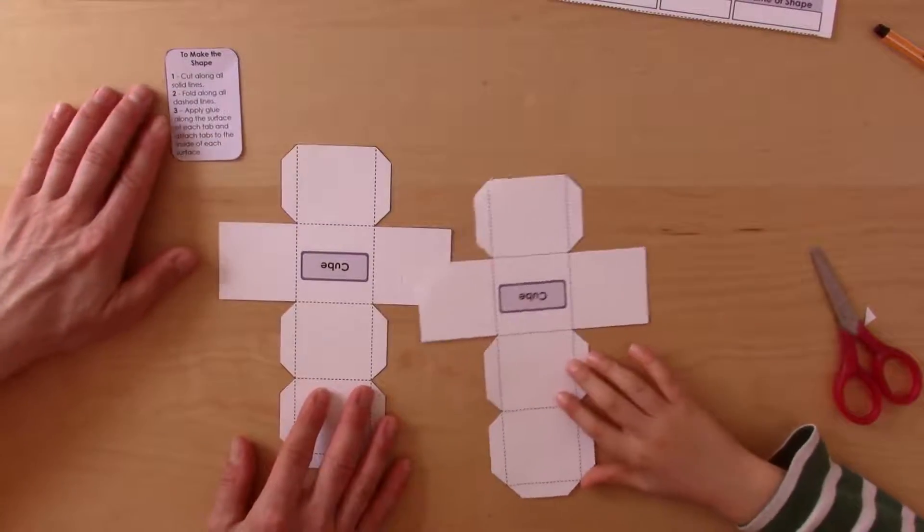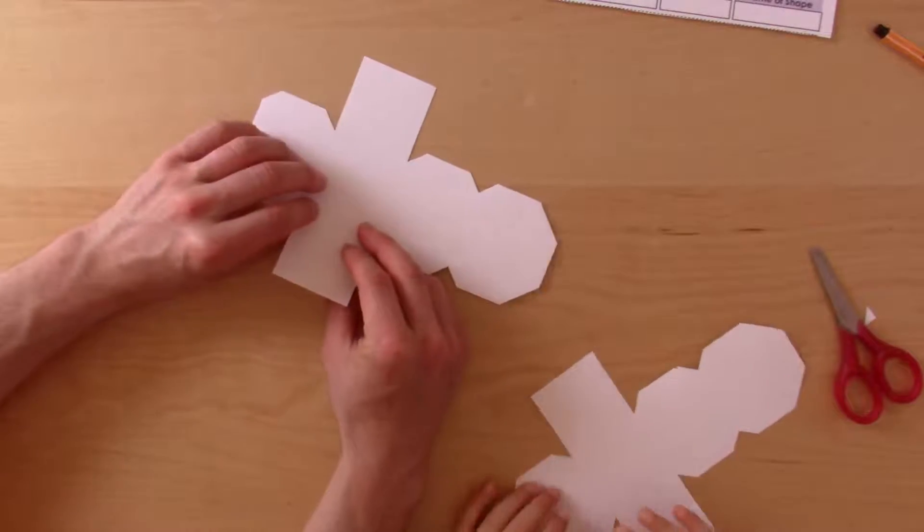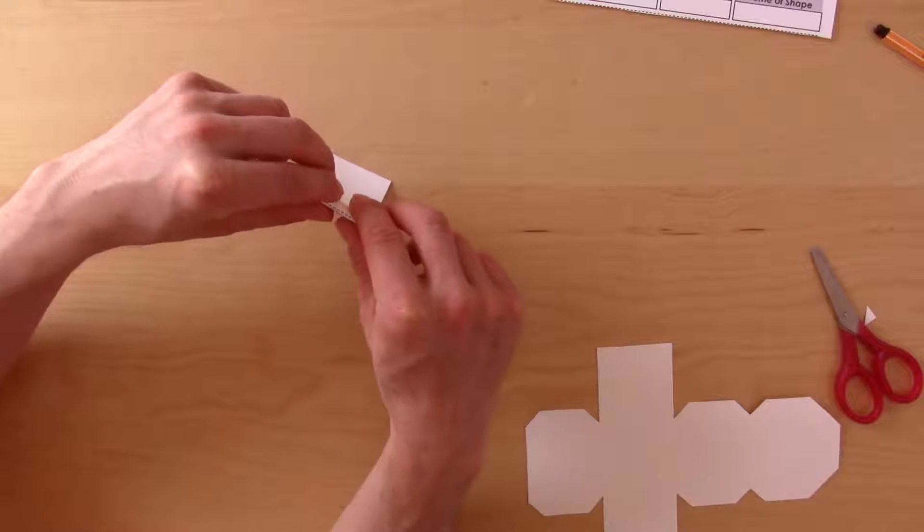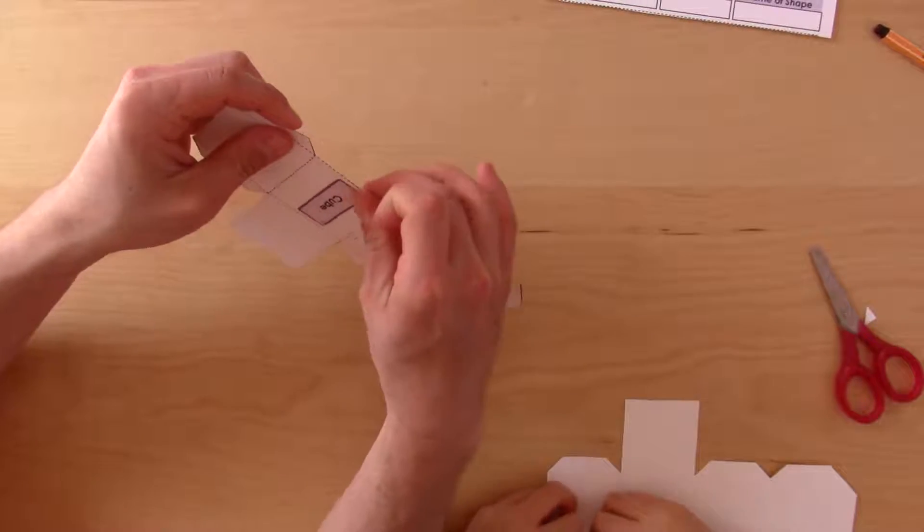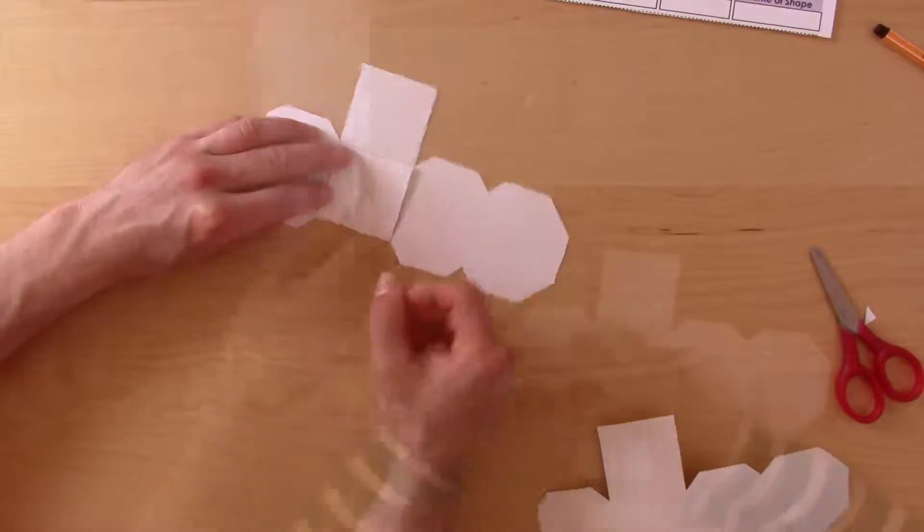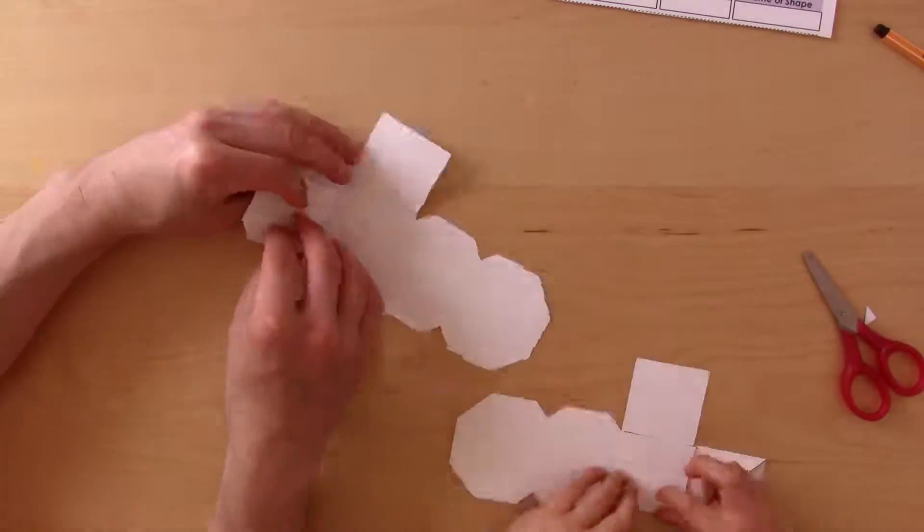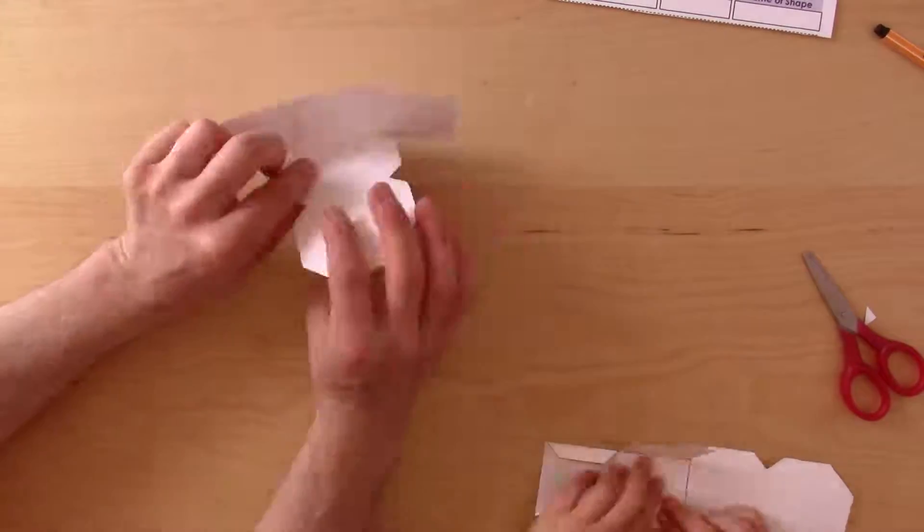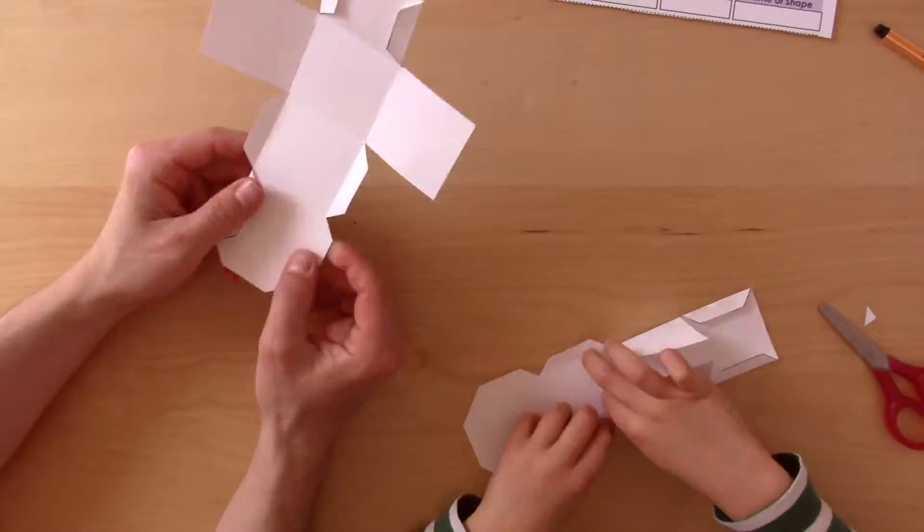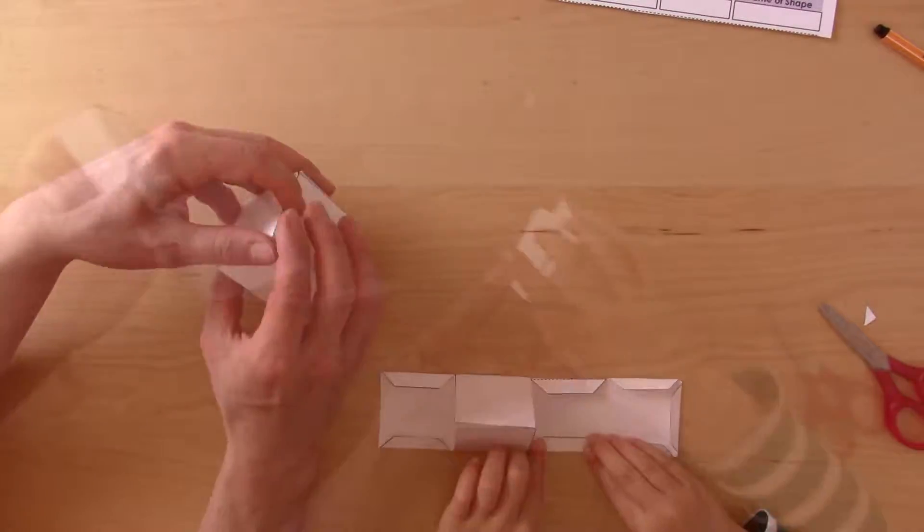So the next step is number two, fold along all dashed lines. What I do is I turn the shape over and then I look for the actual dashed line, and then when I've got it, I pinch and then just press down and make a nice crease. I can run my fingernail along it.